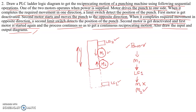Now the punch is moving upwards. When it reaches the top, the next limit switch LS2 is energized or switched on, which will switch off M2 and switch on M1. This cycle continues, giving us continuous reciprocating motion. We have to realize this circuit in a PLC ladder program.